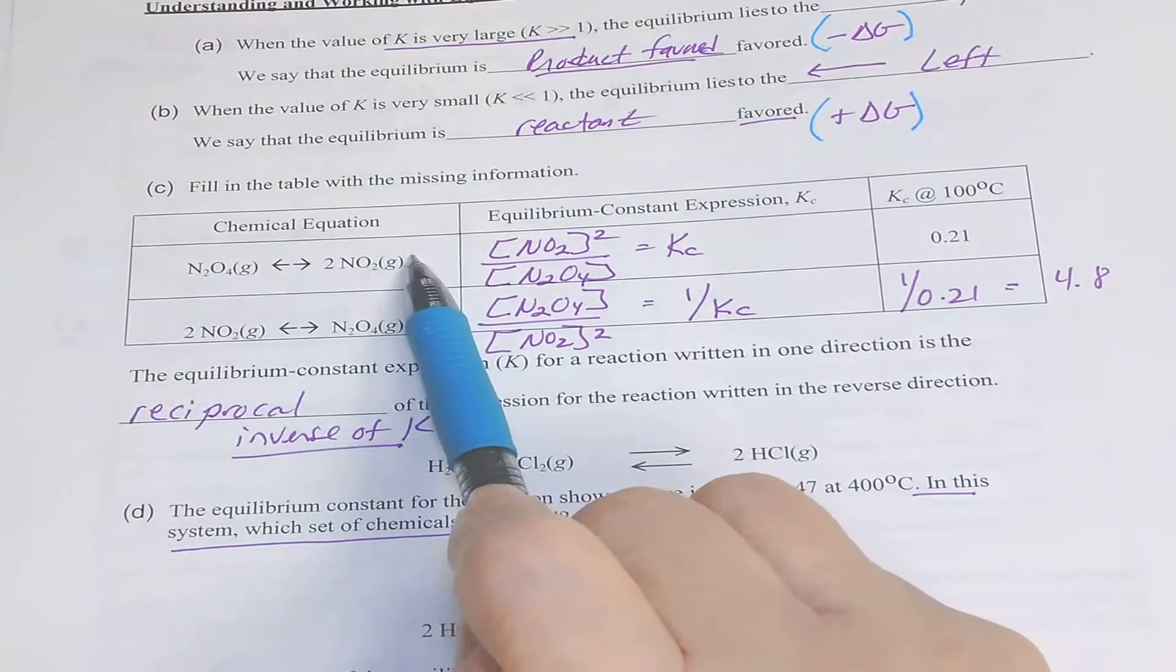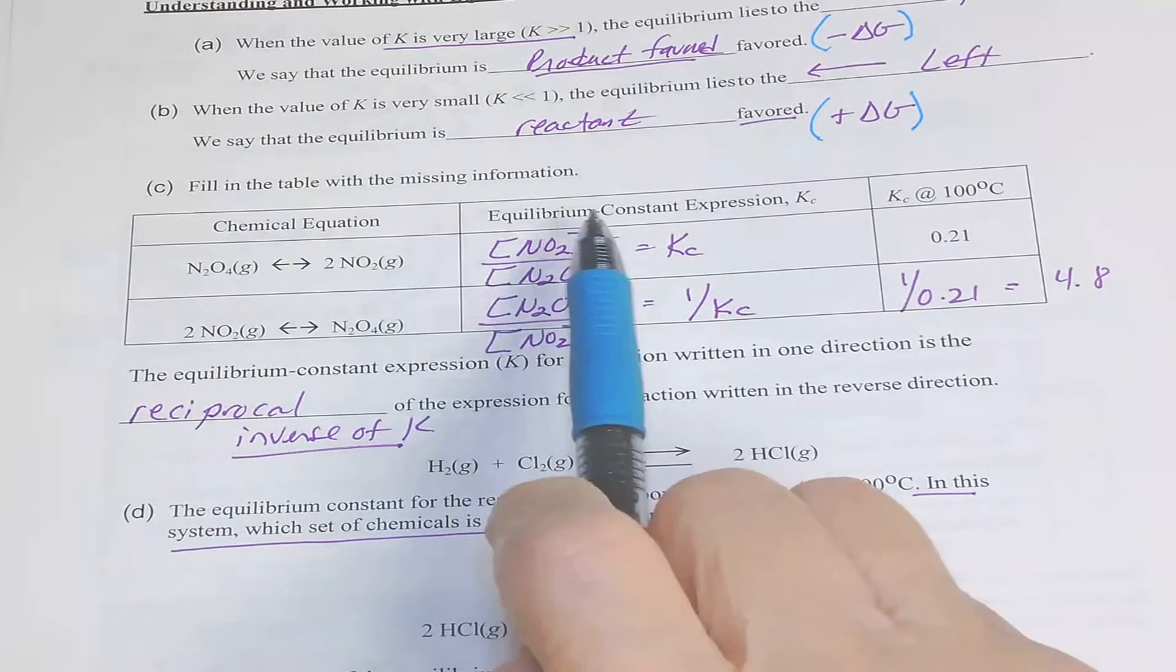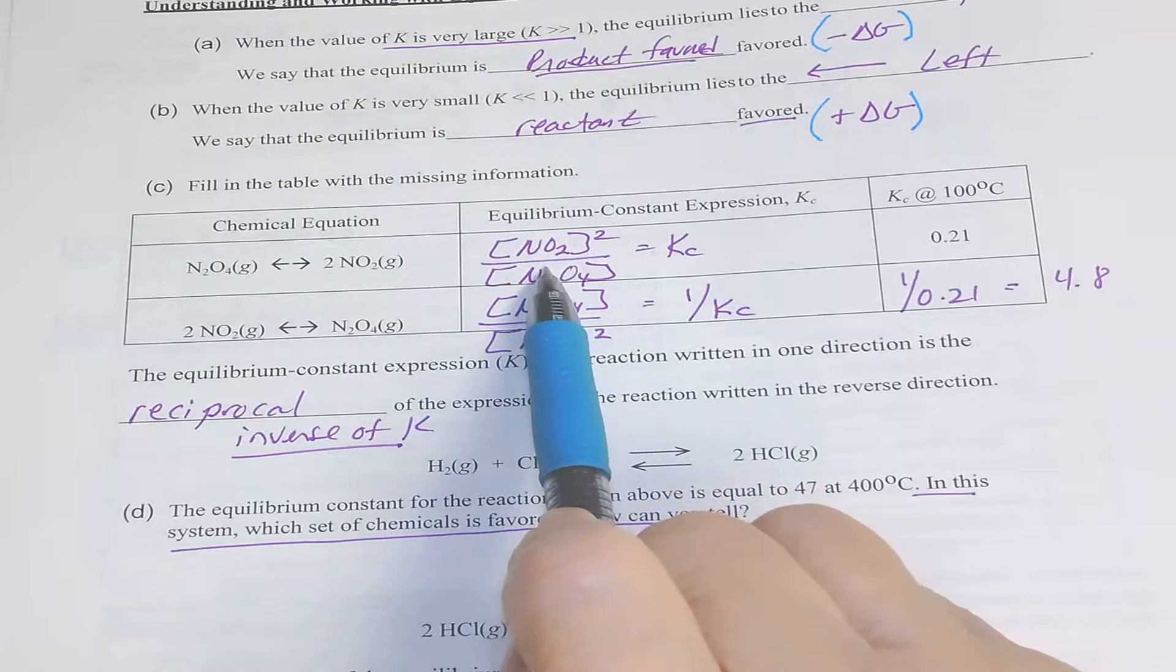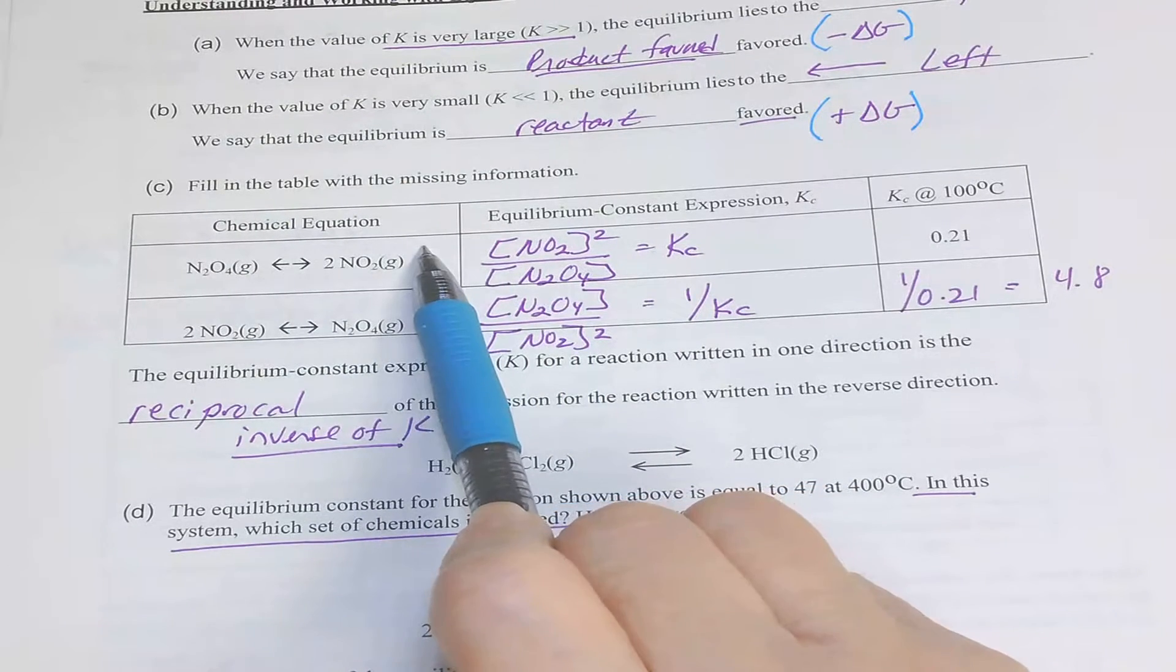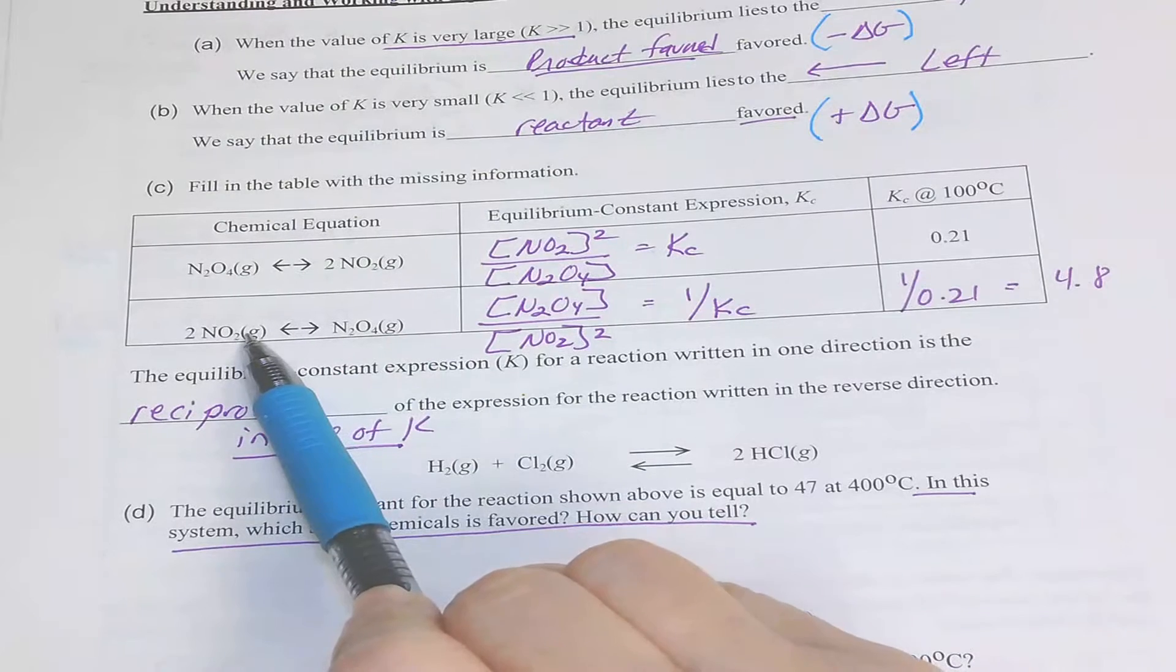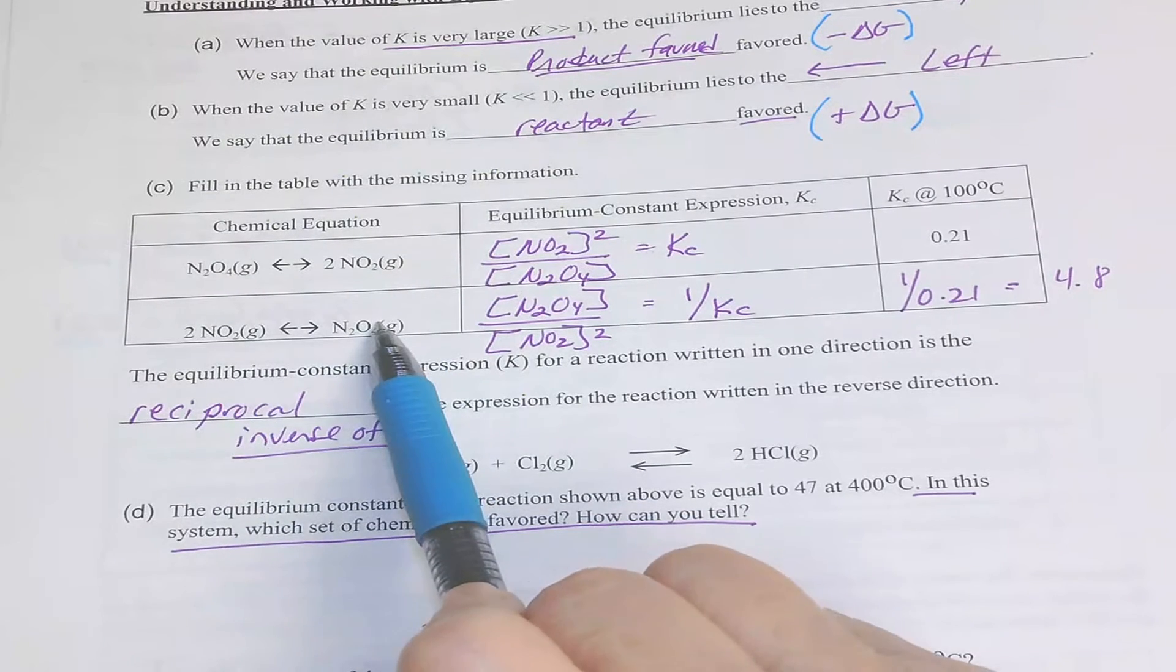You can alter a reaction, and by changing that reaction, you will change the K value. So notice here we have a reaction, and here we have a doubling and a flipping of that reaction.